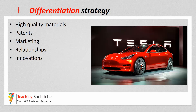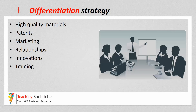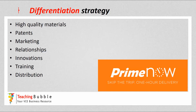Innovations can also differentiate a business — something unique to the business, such as Tesla's self-driving technology. Training is another avenue, where unique training makes employees the real uniqueness of the business, enabling them to be more skilled or knowledgeable than competitors. And finally, distribution — being unique in distribution and offering something other businesses are unable to offer.